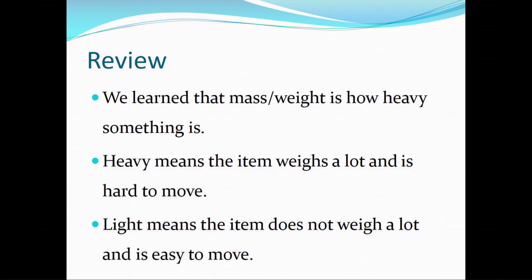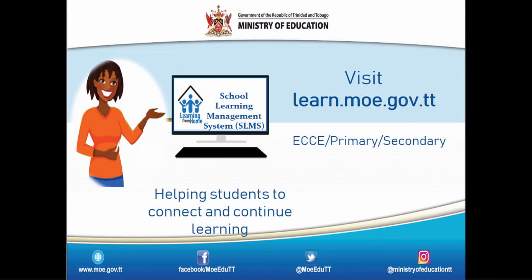Now let's talk about what we learned today. Mass or weight is how heavy something is. Heavy means the item weighs a lot and it is hard to move — like the aeroplane, the ship, or the refrigerator. Light means the item does not weigh a lot and it is easy to move — like the feather or the paper clip. Thank you all so much for joining me today. Please ask your parents to visit learn.moe.gov.tt, where they will find ECCE, primary, and secondary school activities. Thank you all and see you soon!